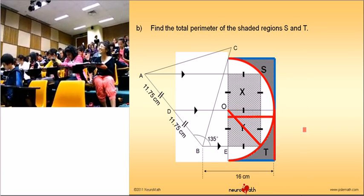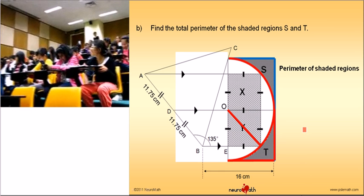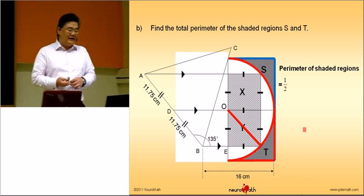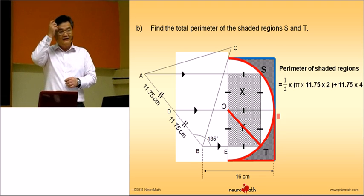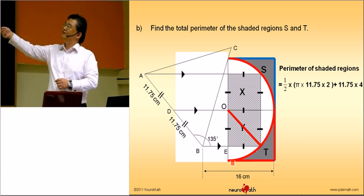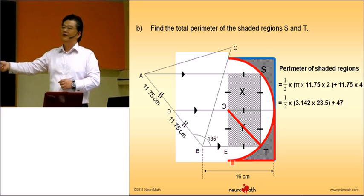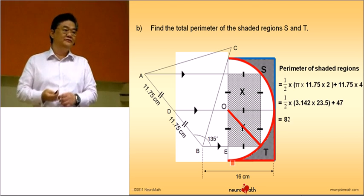Yep. So, the perimeter of the shaded figure is actually half a circle plus the four lines. The plus four radius: one, two, three, four. So, can you all solve now? Yes!